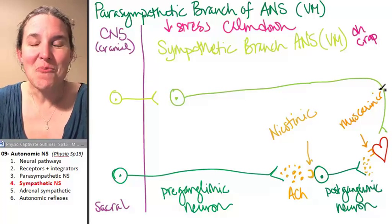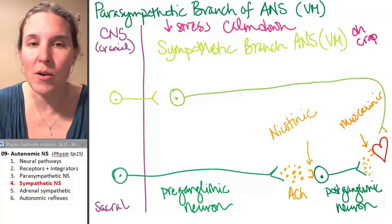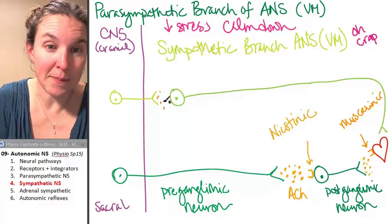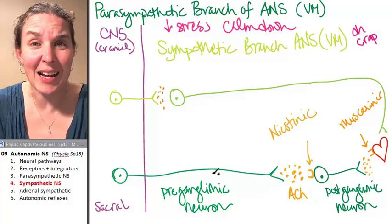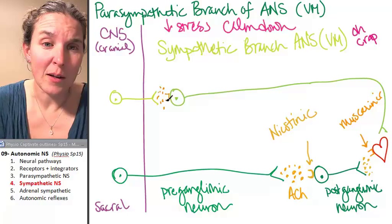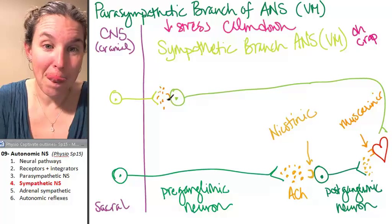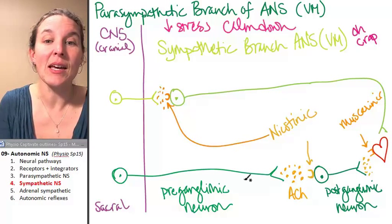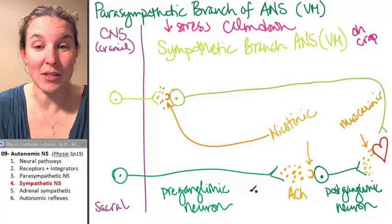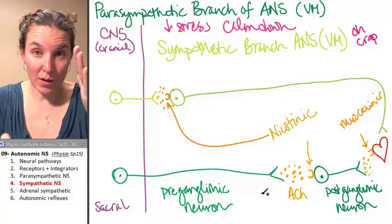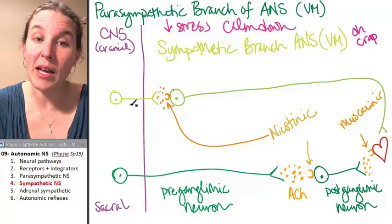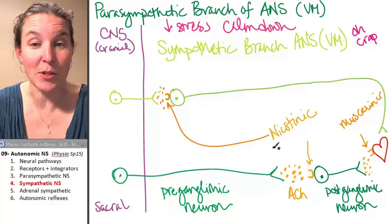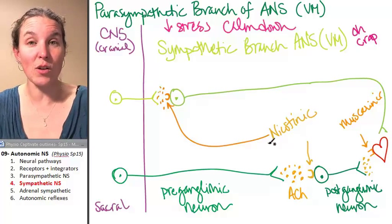Aren't you wondering what the neurotransmitters are? We're going to play Pictionary. My preganglionic neuron dumps acetylcholine onto nicotinic receptors in the ganglionic synapse. My postganglionic neuron has a nicotinic receptor to open sodium channels and pass the message along.